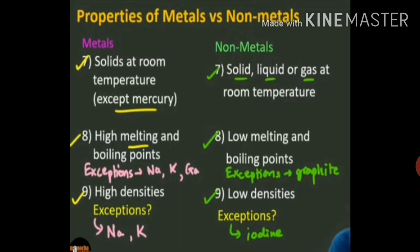Let's talk about melting and boiling points. Metals have high melting and boiling points, but exceptions include sodium, potassium and gallium, which have low melting and boiling points. Non-metals have low melting and boiling points; exception is graphite, which has high melting and boiling points. Regarding density, metals have high density — exceptions are sodium and potassium, which have low density. Non-metals have low density; exception is iodine, which has high density.